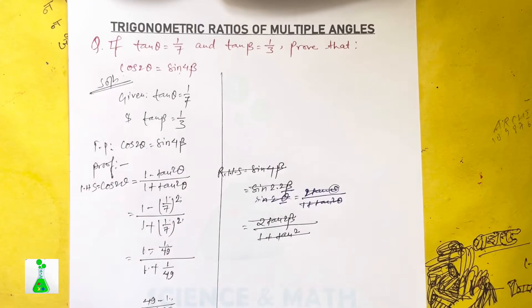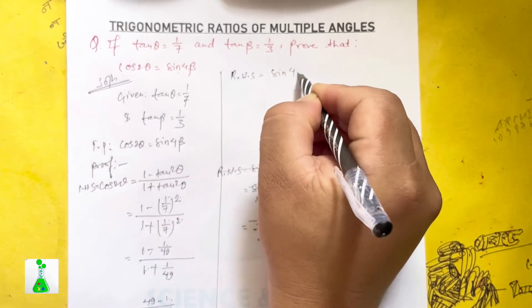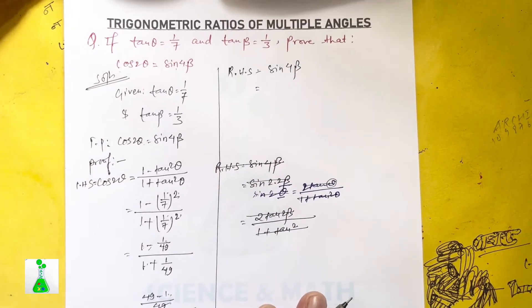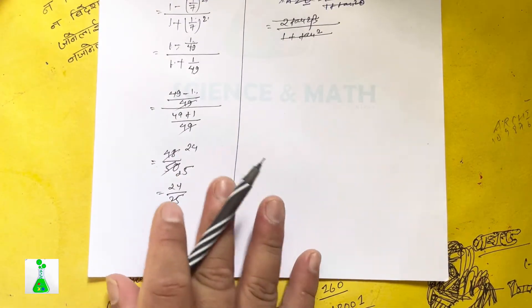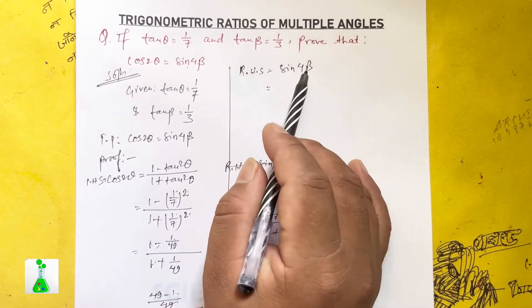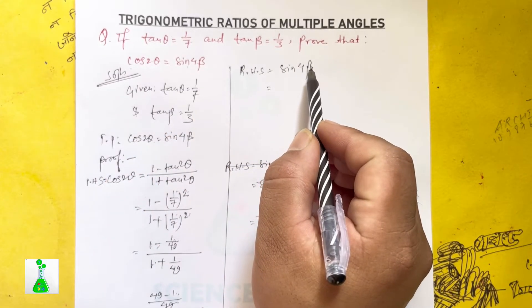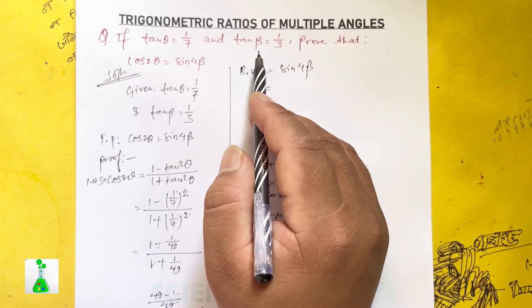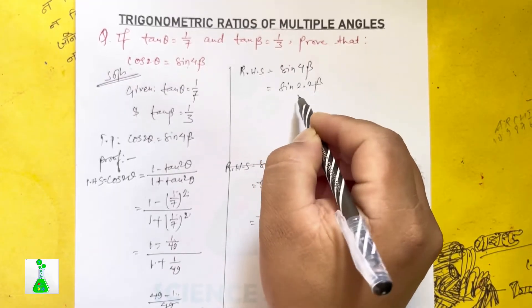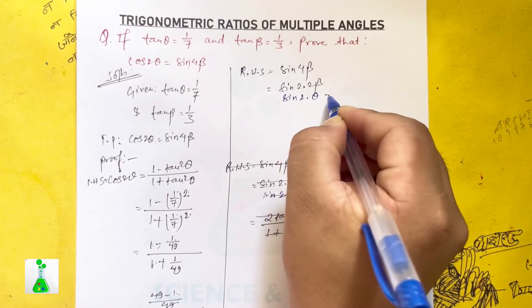Now for the right-hand side: sin 4 beta. We write sin 4 beta as sin 2 times 2 beta, which expands using the double angle formula. We write it as sine 2 theta form: sin 4 beta equals 2 sin 2 beta cos 2 beta.